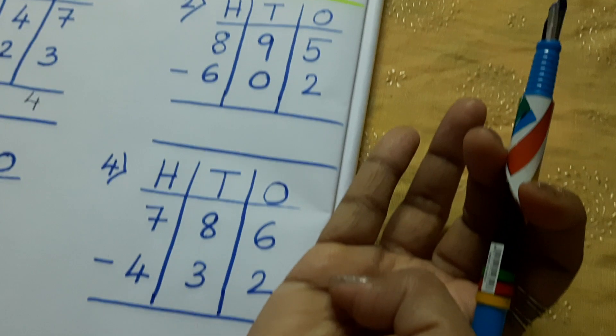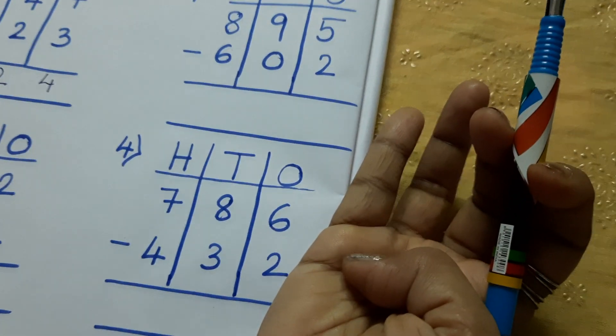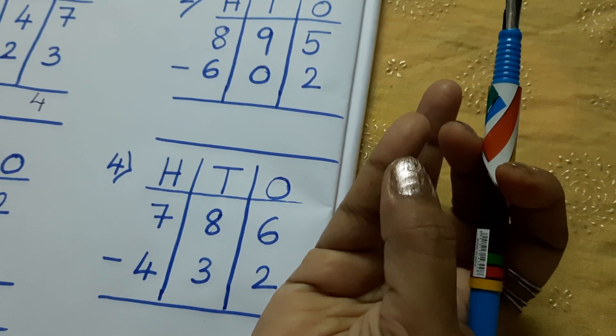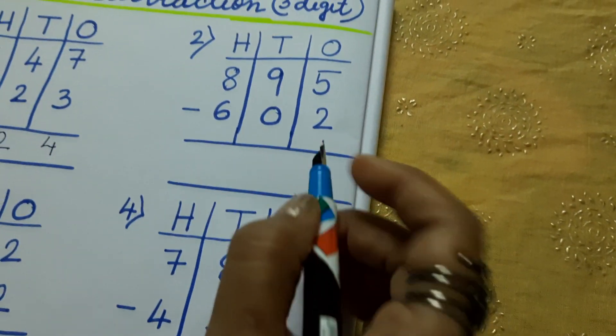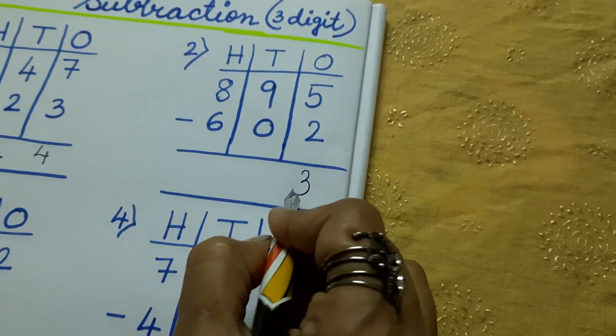In 1s it is 5 minus 2. Let us do 2. 2 I am going to keep here. After 2, 3, 4, 5. How many lines? 3. So, the answer is 3.